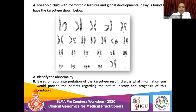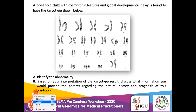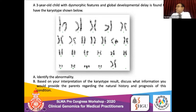There is an extra chromosome 21 — this is a case of Down syndrome. That is by far the commonest chromosomal abnormality seen anywhere in the world and in Sri Lanka. Based on your interpretation of the karyotype results, discuss what information you would provide the parents regarding the natural history and prognosis of the condition.